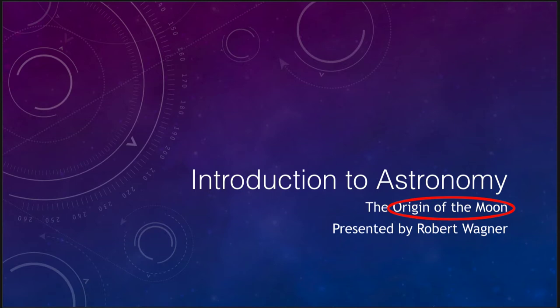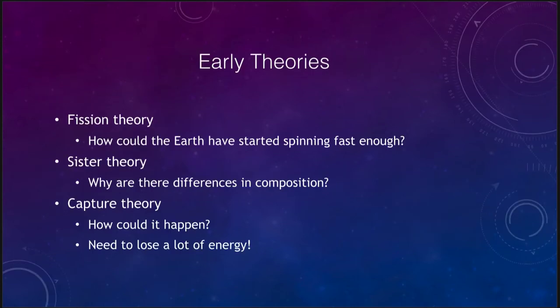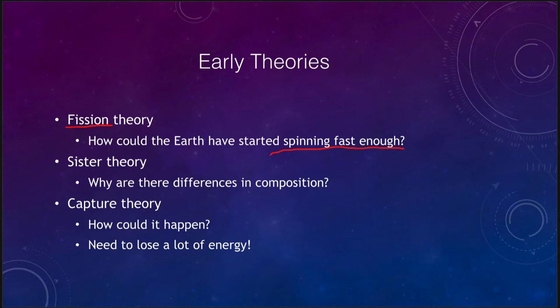There have always been different theories as to where the moon came from. One was the fission theory: that the Earth was spinning and spun fast enough that a chunk of material spun off of it and eventually formed the moon. The big problem with that is why was the Earth spinning fast enough for material to come off of it — it would have to have been spinning incredibly fast — so it's not really known how that could have happened.